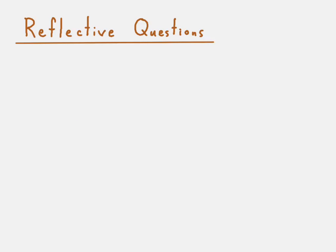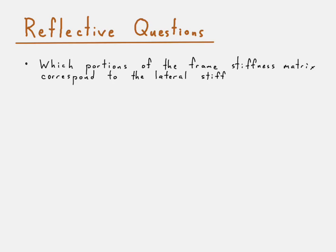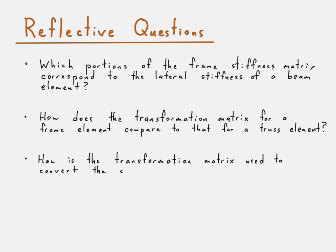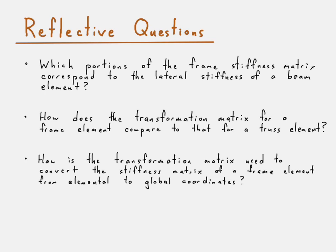That brings us to the reflection questions. First: which rows and columns of the frame stiffness matrix correspond to the lateral and bending stiffness of a beam element? Next: how does the transformation matrix for a frame element compare to or differ from that for a truss element? Then: how is the transformation matrix used to convert the stiffness matrix of a frame element from the elemental coordinate system to the global coordinate system? And finally: why do we want to convert the stiffness matrix for a frame element from its elemental coordinate system to the global coordinate system? That concludes this presentation on the stiffness matrix for a frame element in two dimensions.